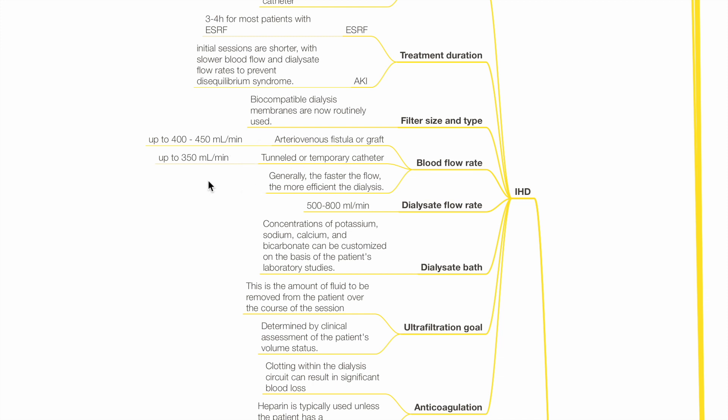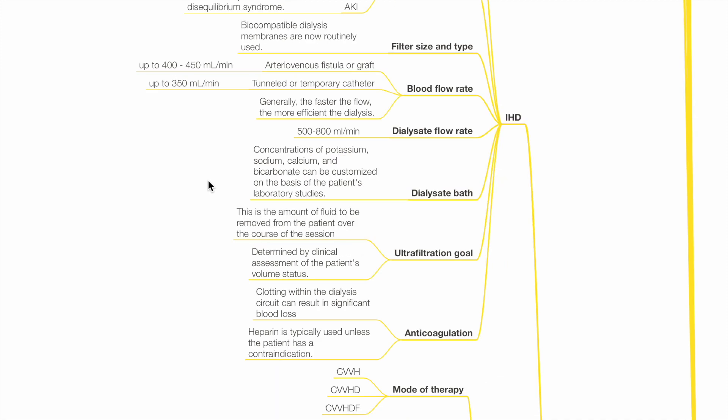Generally, the faster the flow, the more efficient the dialysis. Dialysate flow rate is 500 to 800 mLs per minute.